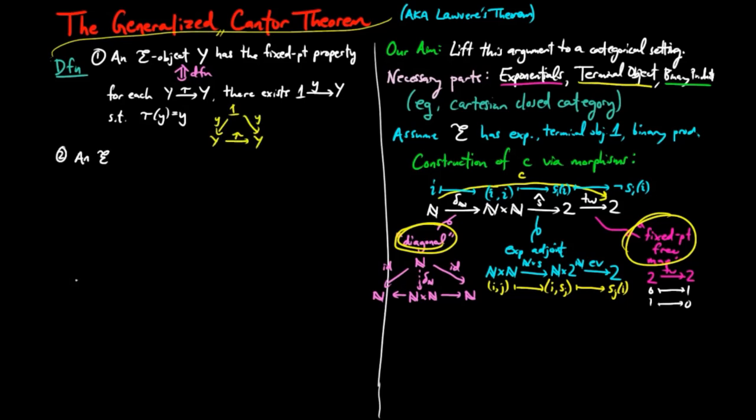Two, an e object y is fixed point free, provided that there exists endomorphism tau from y to y, which has no fixed points. And note that one and two here are just logical negations of each other.